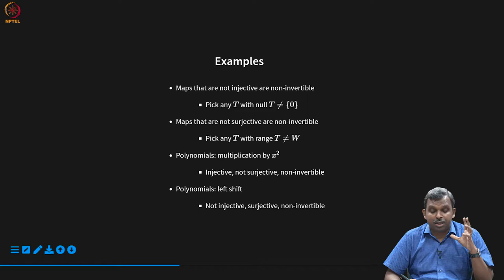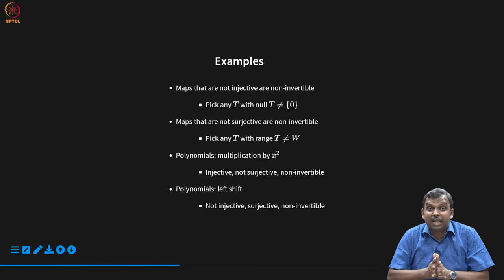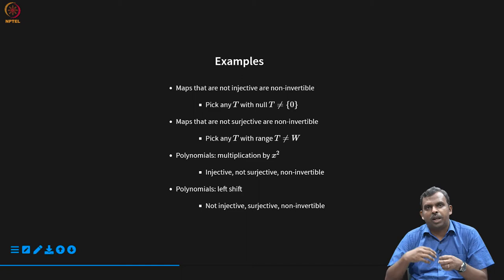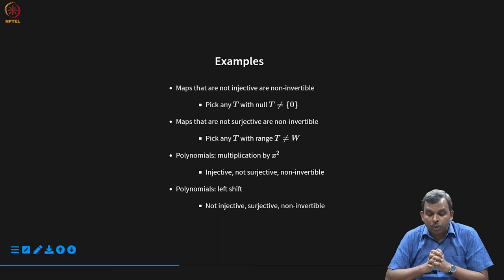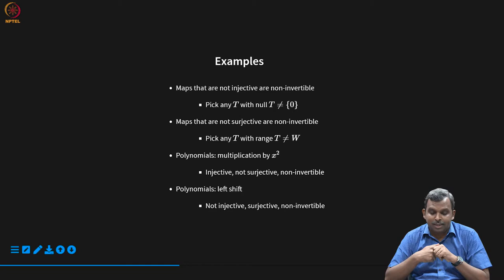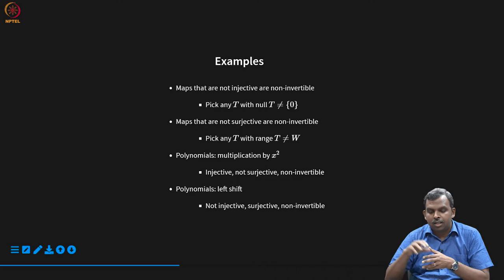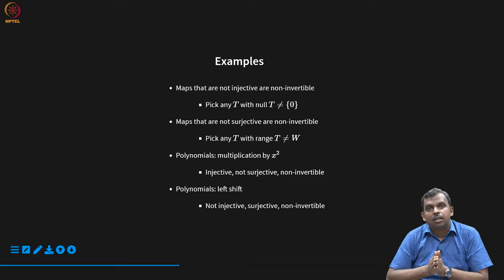Interesting possibilities arise in infinite dimensions, such as polynomials. For example, multiplication by x² is a linear map: given a polynomial, you multiply by x², every term gets multiplied by x². It is injective (one-to-one), since each polynomial maps to a unique output. But it is not surjective — constant polynomials and linear polynomials are not in the range. So it is non-invertible: an infinite-dimensional case where the map is injective but not surjective.